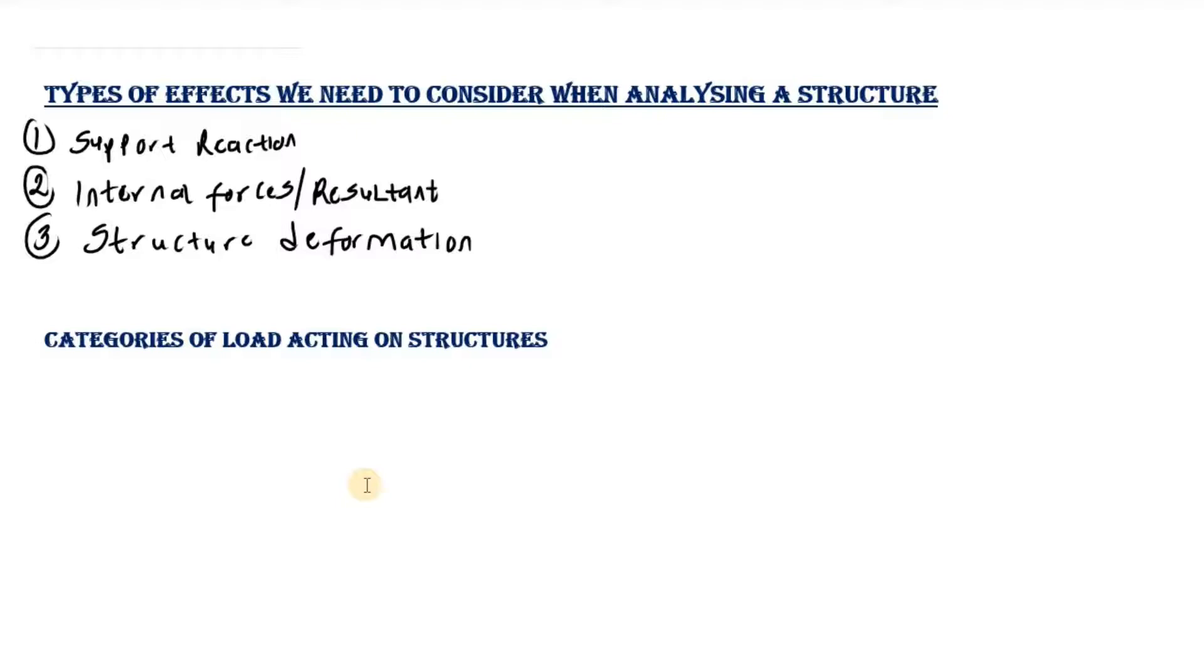There are primarily two categories of load a structure will experience. The first category is the gravity load. This load acts up and down with the direction of gravity, and there are two types of gravity load. The first one is dead load.